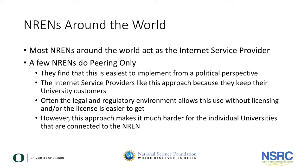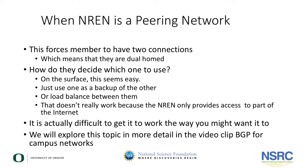However, when the NREN is a peering-only network, it makes it much more difficult for the individual members that are served by the NREN. When the NREN is a peering network, it means that the NREN only provides connectivity to a portion of the internet, so the connected members must have a second connection to an internet service provider so that they have full access to the internet. Using these two connections is not simple. It is not like having two ISP connections that can be used as redundant backup or load balance. It requires BGP at the campus level to make it work right. We will explore the campus use of BGP in a separate video clip.